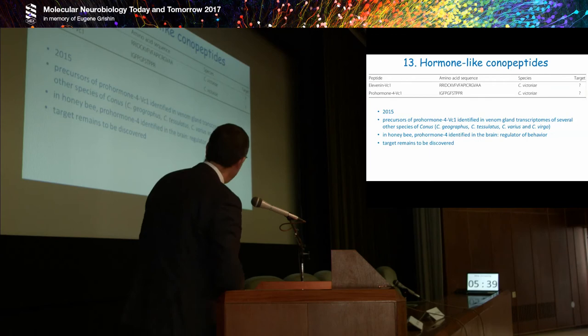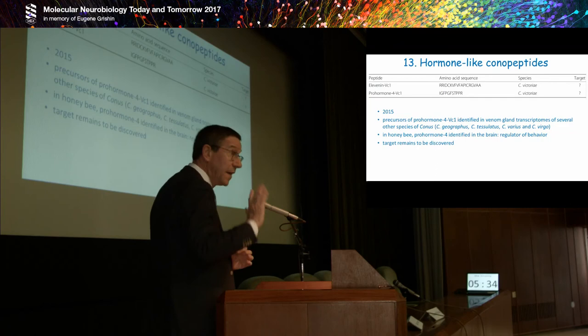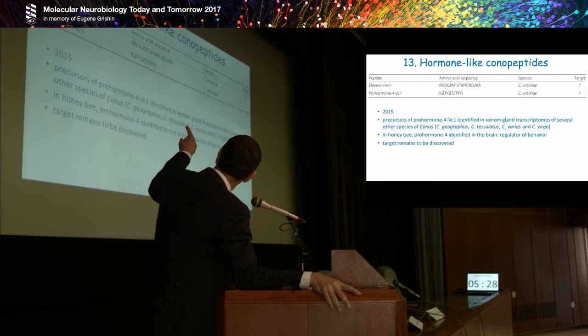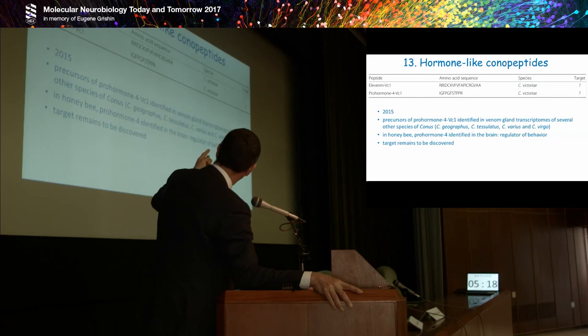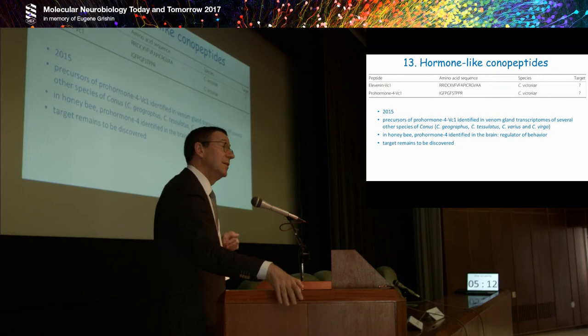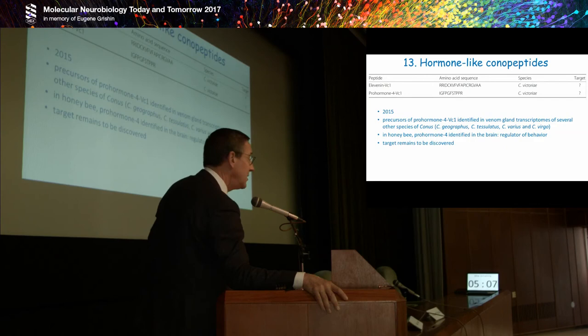And then the last one is the hormone-like conopeptide family, with two members, the 11N and the pro-hormone. Very recent data, we know these from 2015. The precursors of pro-hormone 4 VC1 identified in the venom gland, quite interestingly, can also be found in many Conus species. It's not restricted to this one VC species alone. You can also find it in Geographus, Tessulatus, Varius and Virgo. What we know from insect biology is that in the honeybee, the pro-hormone 4 identified in the brain of this insect regulates behavior. However, here again, the target, at least in vertebrates, remains to be discovered.